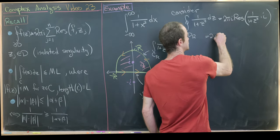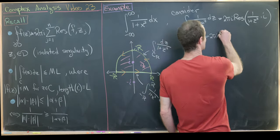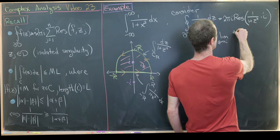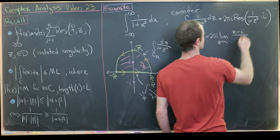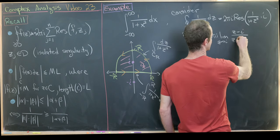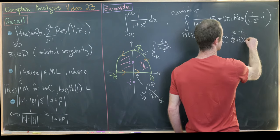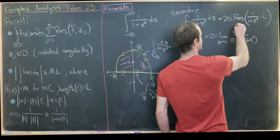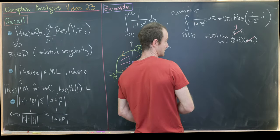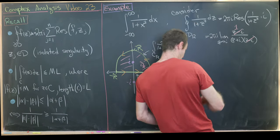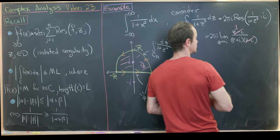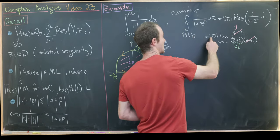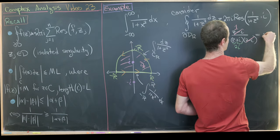We get 2πi times the limit as z → i of (z − i) over (z² + 1). Factoring the denominator as (z + i)(z − i), the (z − i) terms cancel, leaving 1 in the numerator. Letting z → i gives 2i in the denominator. The 2πi and 2i cancel, giving us π.